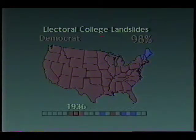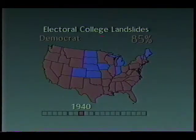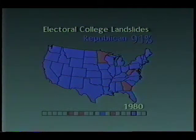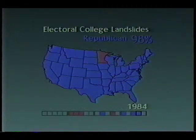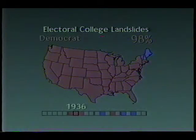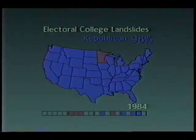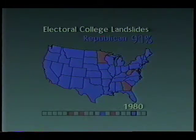We start with the landslide elections shown in the preceding example, but reorder them according to the magnitude of the winning candidate's share of the vote. Now, we alter the pace of the reordered sequence by varying the duration of each scene in approximate proportion to the magnitude of the landslide victory. The more lopsided the victory, the longer the scene is viewed.